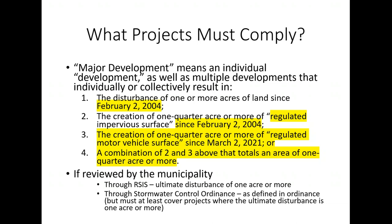The reason the definitions aren't identical is that federal MS4 requirements only mandate that municipalities address post-construction stormwater management for disturbances of one acre or more — the quarter-acre threshold is a New Jersey-only requirement. That quarter-acre standard came from what the state was already doing through the Flood Hazard Area Control Act rules before the stormwater management rules were adopted. We didn't force the quarter-acre down onto municipalities because it had previously been only a state requirement beyond the federal minimum.